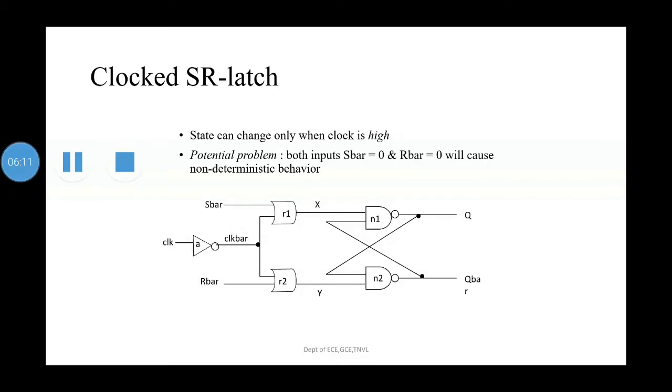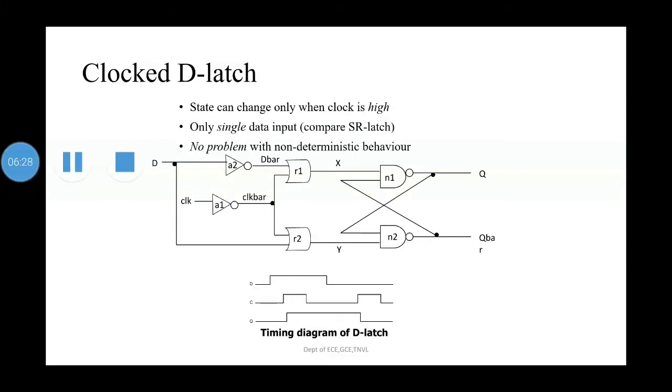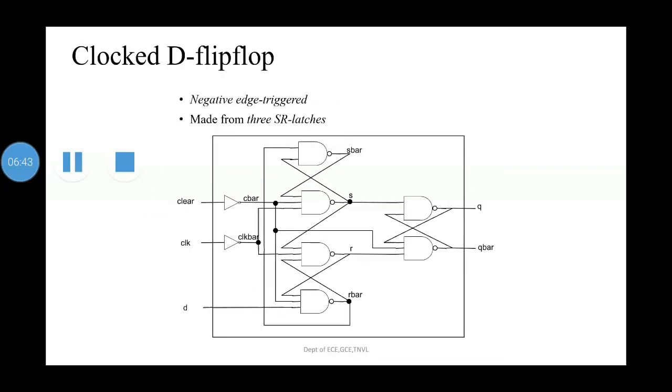The clocked SR latch state can change only when the clock is high, but the potential problem is both inputs S bar equals 0 and R bar equals 0 will cause non-deterministic behavior. The clocked D latch states can change only when the clock is high. Only a single data input can be given compared to SR latch, with no problem with non-deterministic behavior. The clocked D flip-flop is negative edge-triggered and is made from three SR latches.